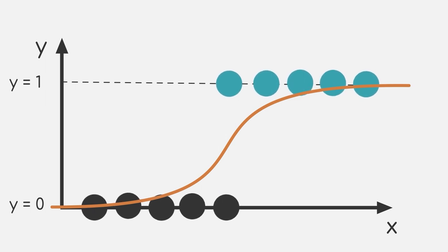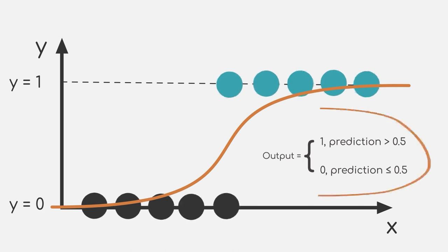Mathematically speaking, we assume that the relation between inputs and outputs can be described by having 1 as output whenever our function predicts something higher than 0.5, and 0 as output whenever it predicts a value that is smaller or equal to 0.5.